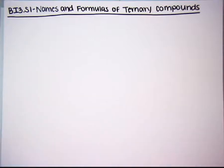In this lesson, we're going to go over Big Idea 3, Standard 1: Names and Formulas of Ternary Compounds. Binary meant that the compound had two ions. Ternary, we're going to have three.